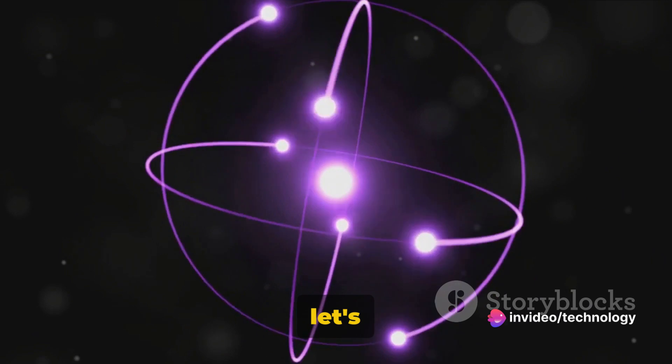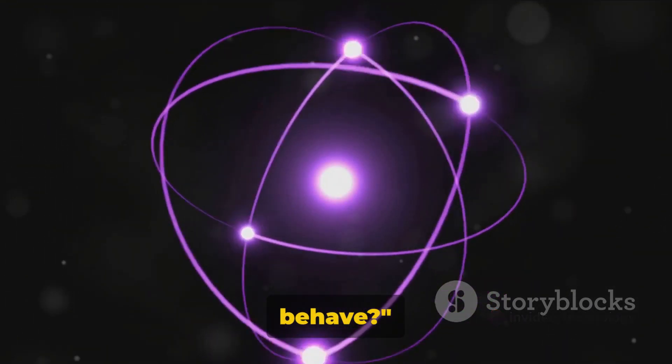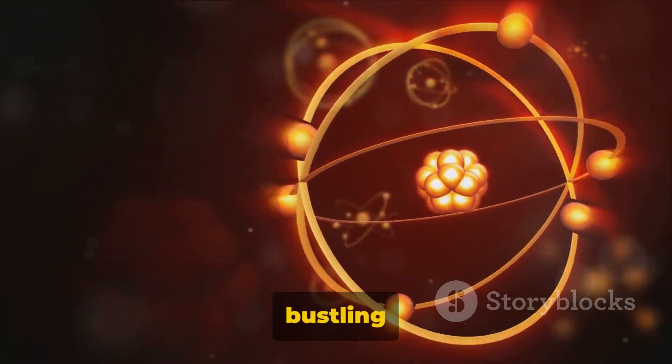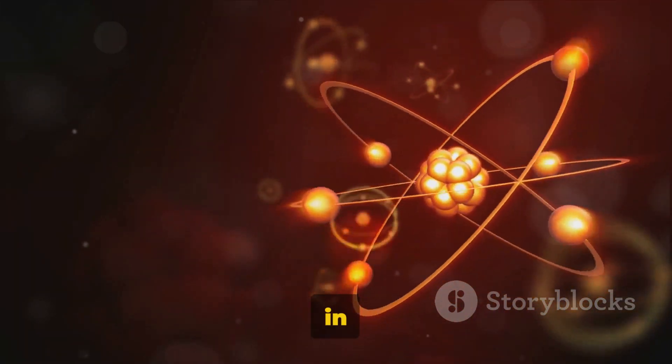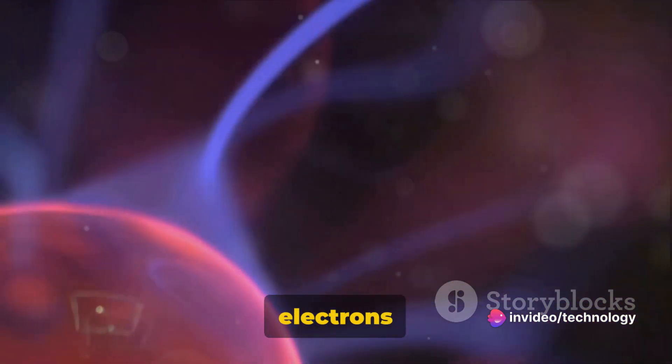Now that we know what electrons are, let's delve a little deeper. How do these tiny particles behave? Imagine a bustling city at rush hour, with cars zipping around in a seemingly chaotic manner. That's a bit like the world of electrons in an atom.